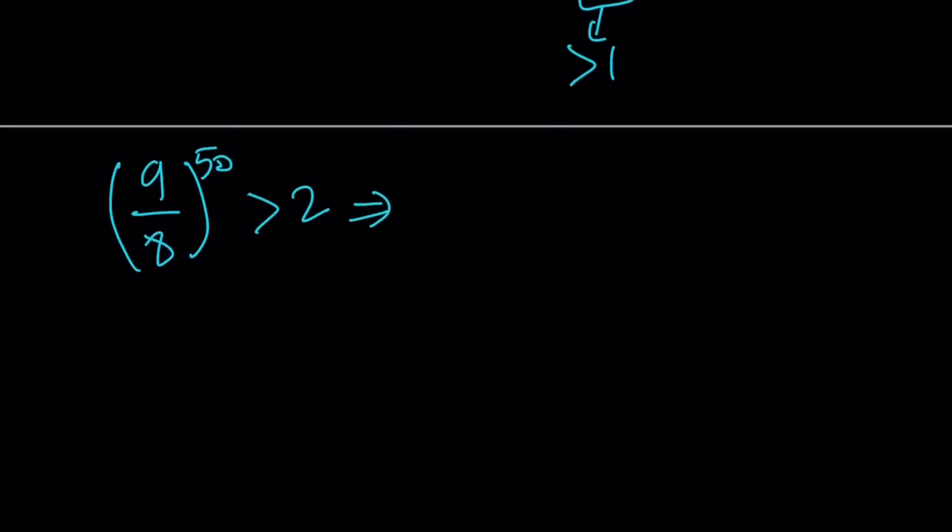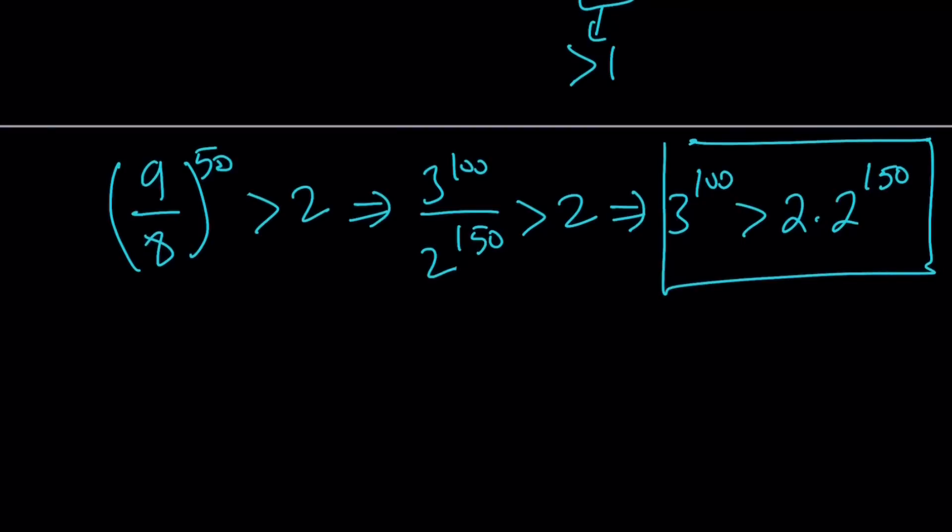Well, I'm going to replace 9 over 8 to the 50 with 3 to the power 100 divided by 2 to the power 150. Remember, that's where it comes from. It's greater than 2. And then cross multiply, but do not combine the powers. Make sense? You'll see in a little bit why we're not combining the powers. I know it's tempting. You want to write 2 to the power 151, but don't do it. Now, this is a super duper important fact. Let's go ahead and use it in our problem. 2 to the power 3 to the power 100 is greater than 2 to the power 2 times 2 to the power 150.